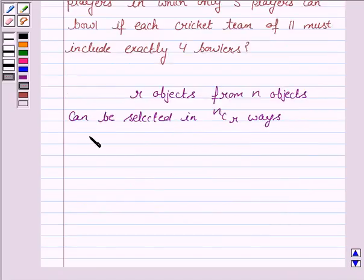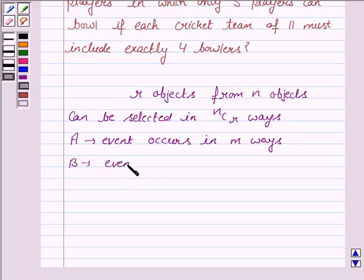And we should also know the fundamental principle of counting, which says that if event A occurs in M ways and event B occurs in N ways, then events A and B occur in M into N ways.